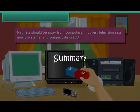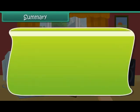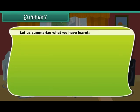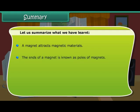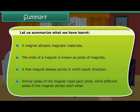Let us summarize what we have learned. A magnet attracts magnetic materials. The ends of a magnet are known as poles of the magnet. A free magnet always points in the north-south direction. Similar poles of the magnet repel each other, while different poles of the magnet attract each other.